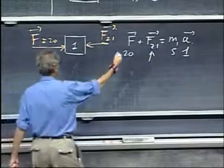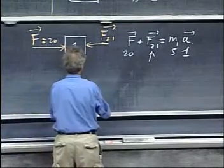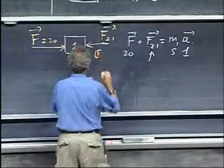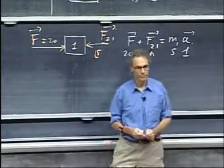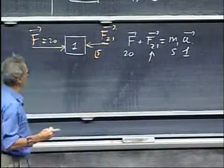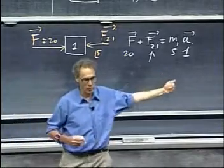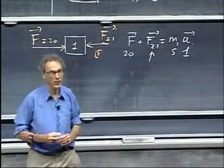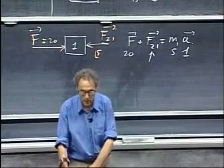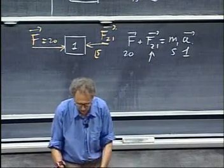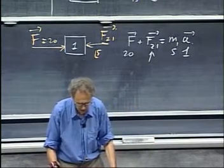F21 is in this direction, and the magnitude is exactly the same as F12. So you see, one is pushing on two with 15 newtons in this direction, two is pushing back on one with 15 newtons, and the whole system is being accelerated with one meter per second squared.